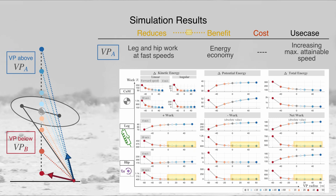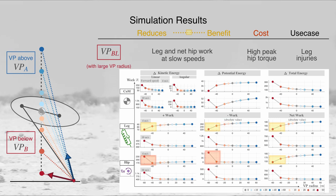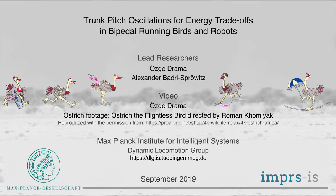At the same time, one can reduce hip and leg work jointly by using a virtual point above at fast speeds of 8 to 10 meters per second, and a virtual point below at slow speeds of 4 to 6 meters per second. A virtual point below the leg axis — the VPBL — is useful to reduce leg work further at slow speeds of 4 to 6 meters per second, at the expense of high peak hip torques. In summary, we derive three potential key strategies to leverage trunk pitch motions that reduce either the energy fluctuations of the center of mass or the work performed by the leg and hip, and show that these strategies are also valid for human-like trunks and could be used in legged robotics.